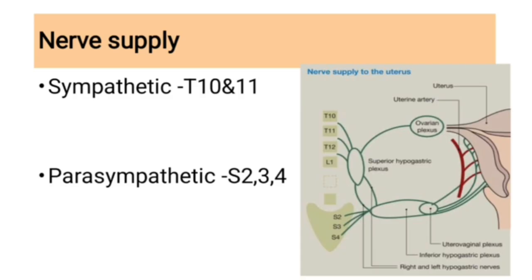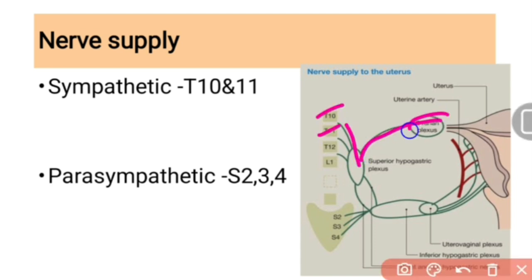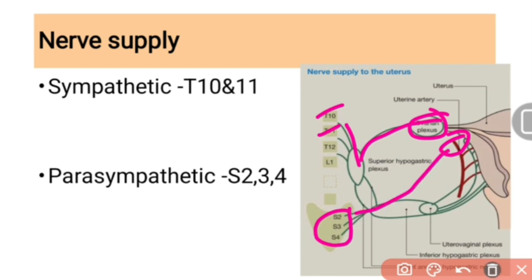Nerve supply: the ovaries receive sympathetic nerve supply from T10 and T11 segments of the spinal cord. These form the ovarian plexus. Parasympathetic supply is derived from sacral segments S2, S3, and S4, providing parasympathetic nerve supply to the ovary.